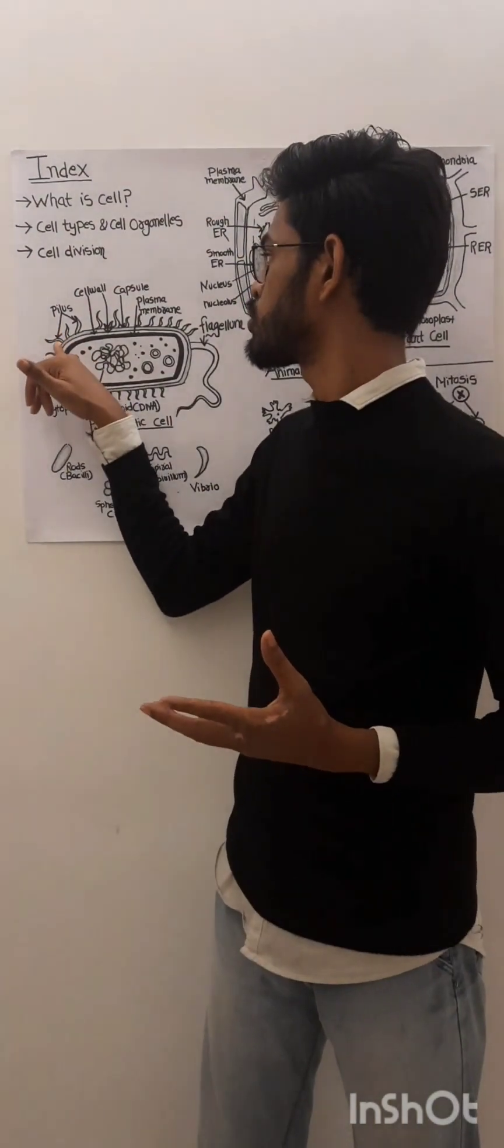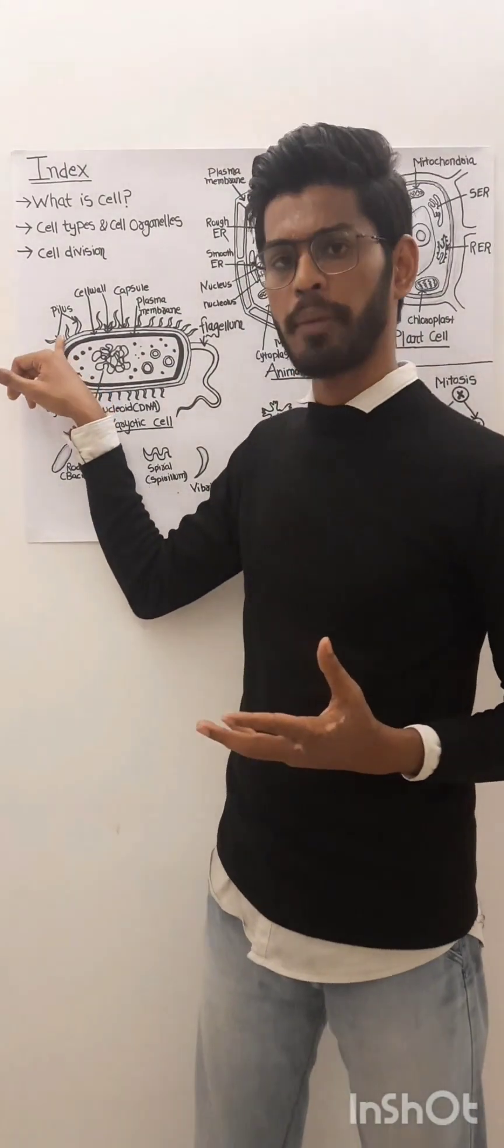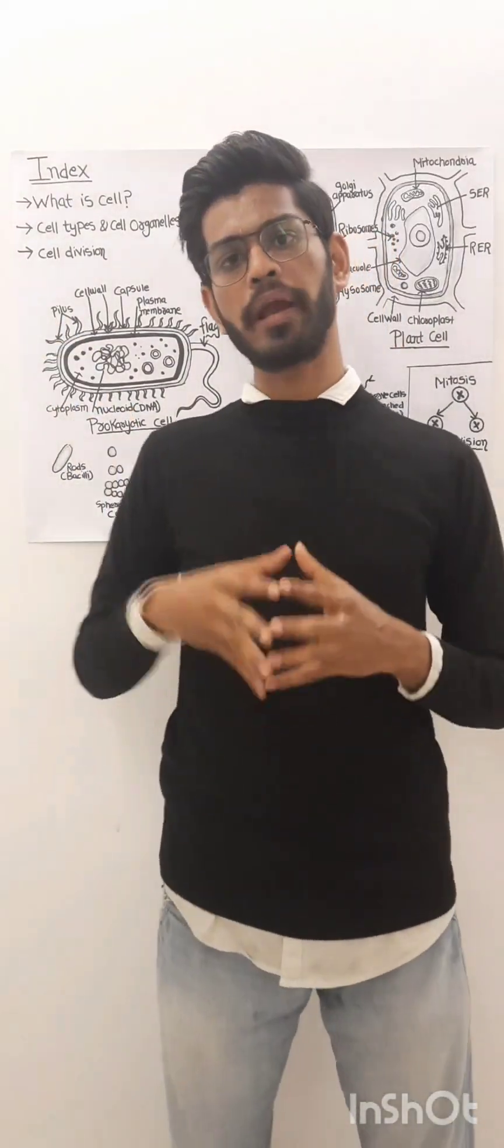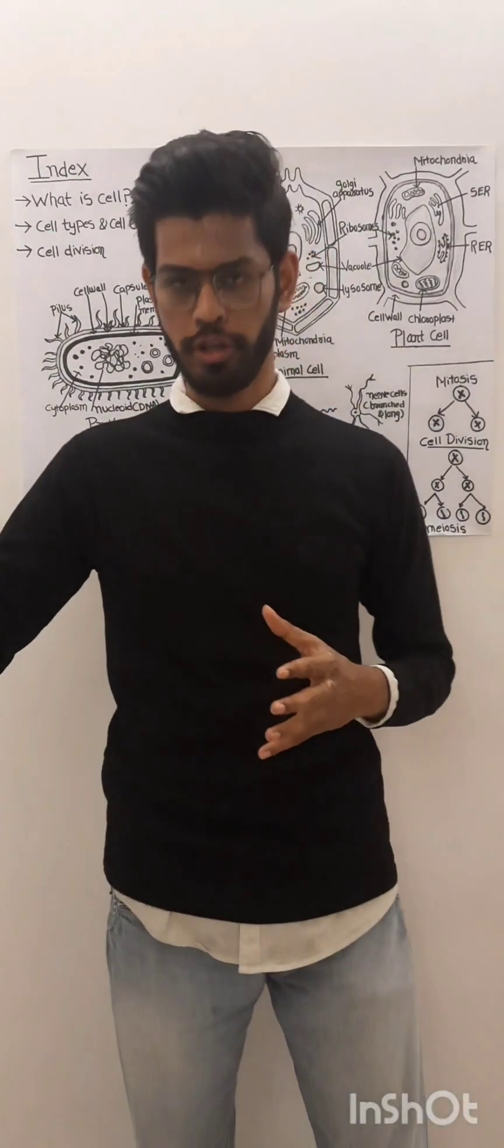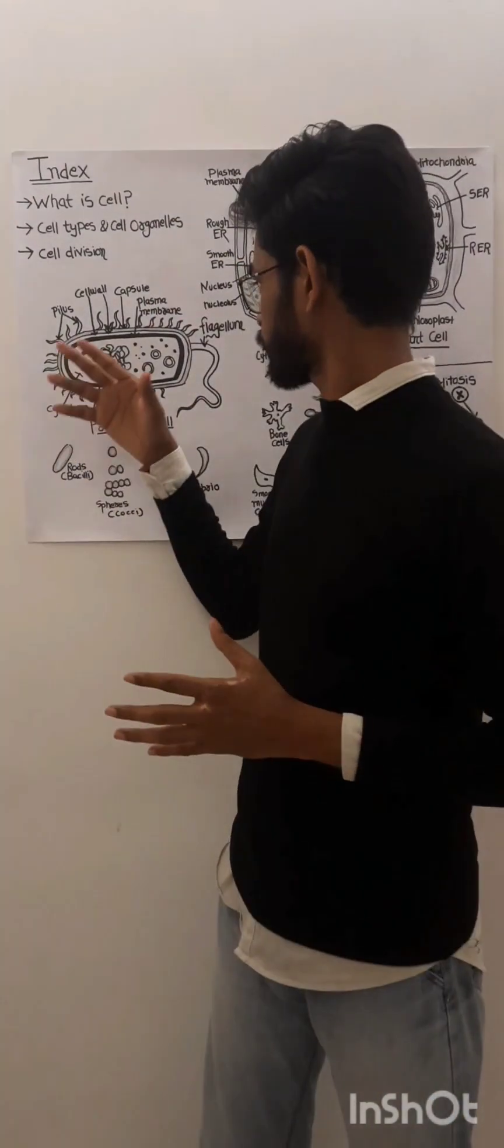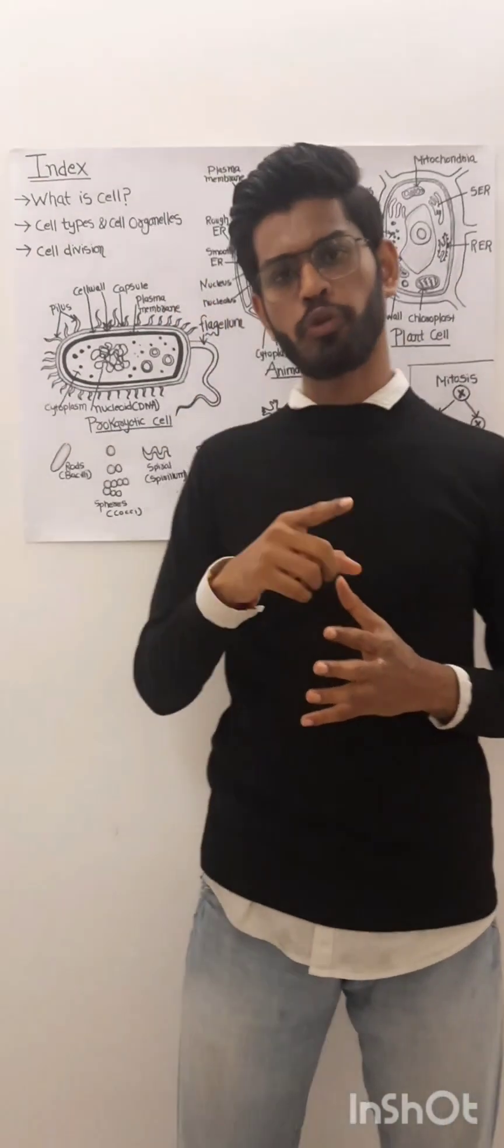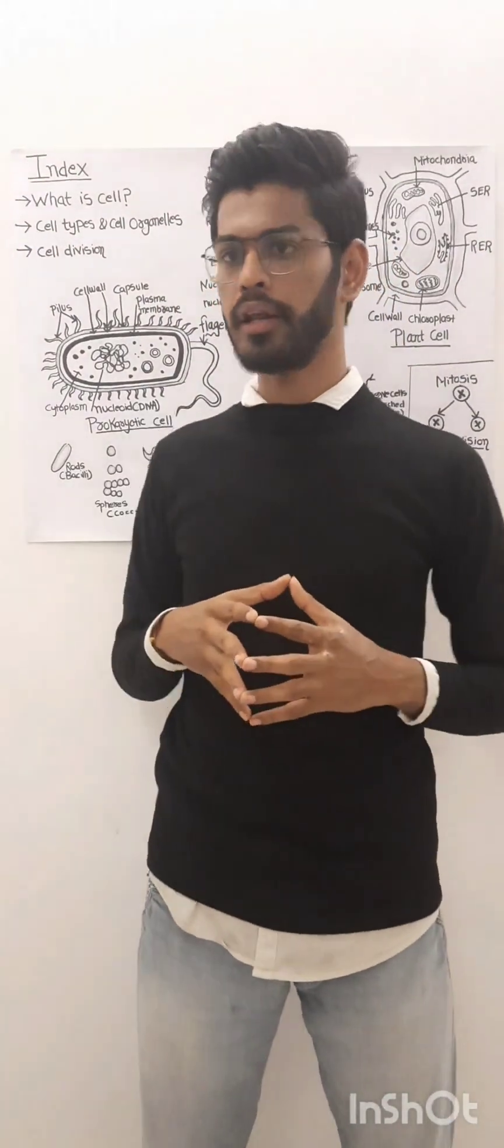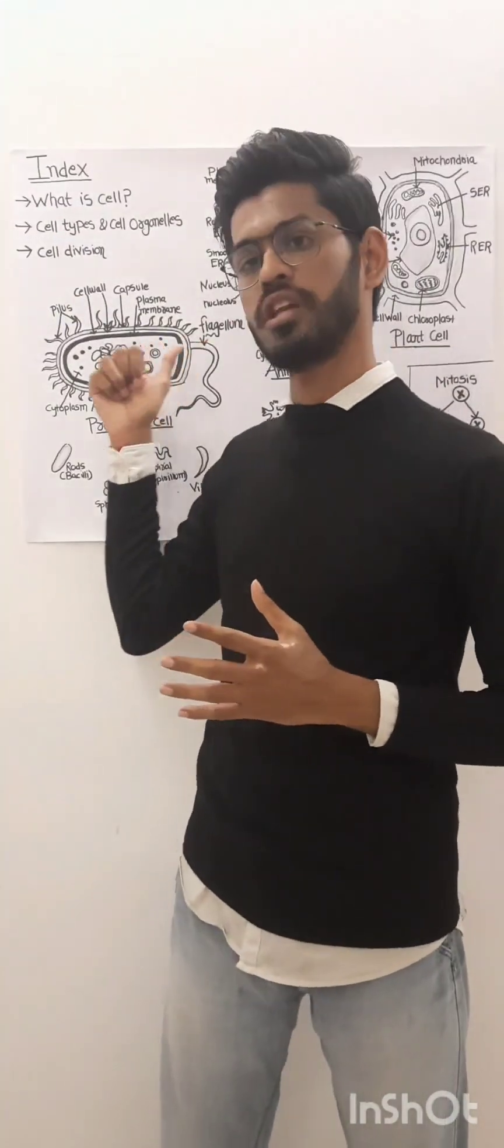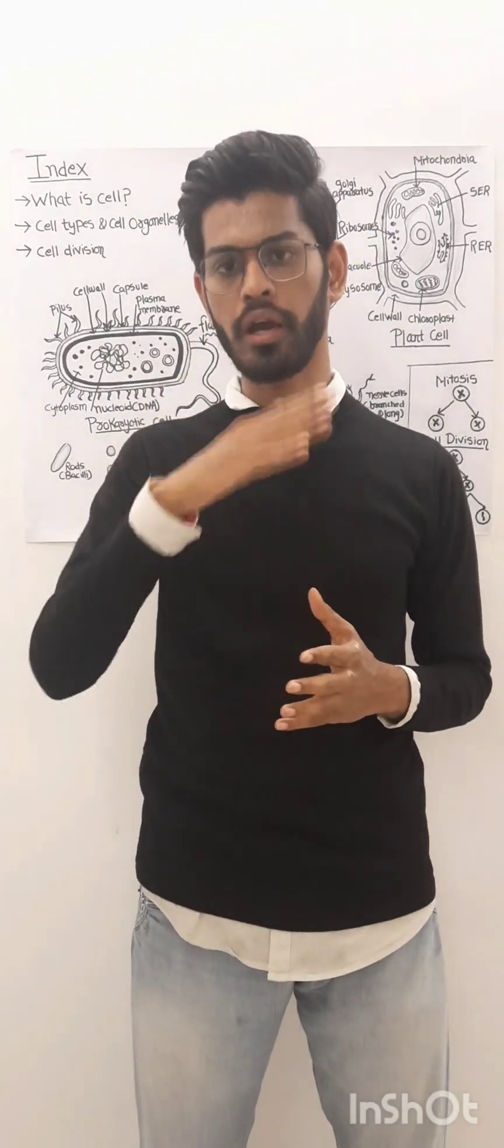The next is the pili. The hair-like appendages on the surface of the capsule are known as pili, which help the bacteria to attach itself to other surfaces. Next is the flagella. The bacteria are called motile and non-motile. The bacteria which are motile have flagella, which helps them in locomotion to move.